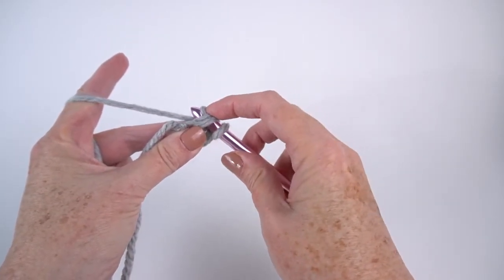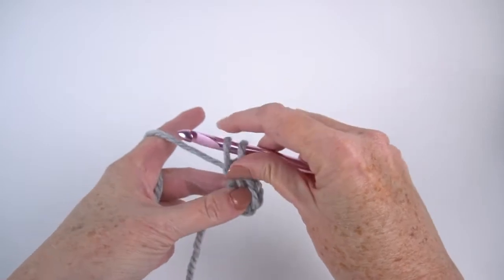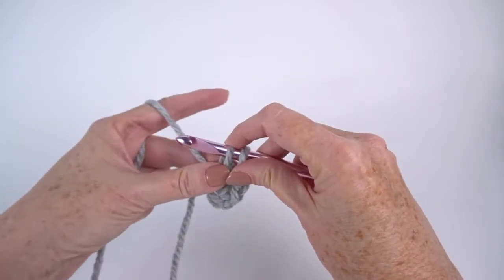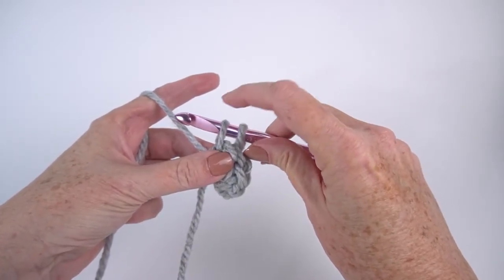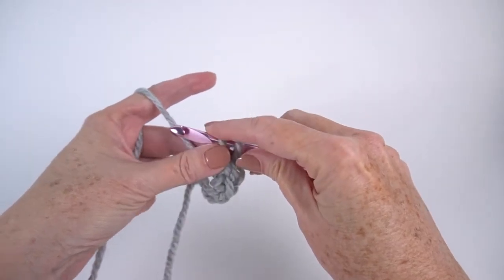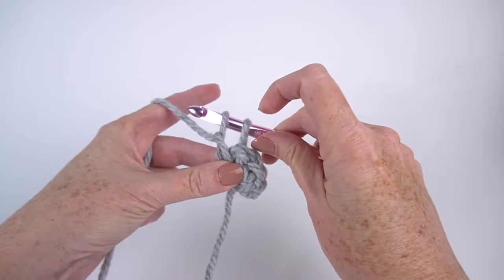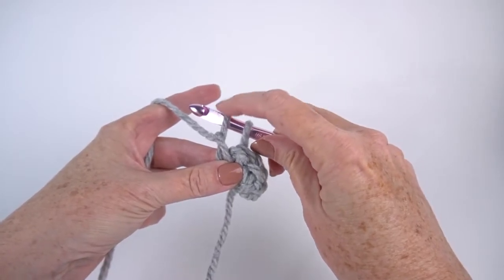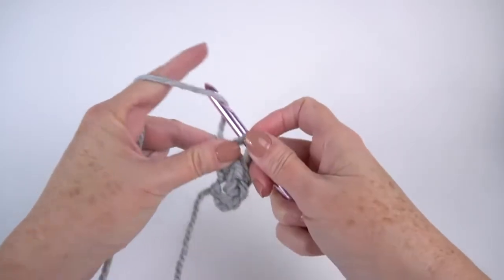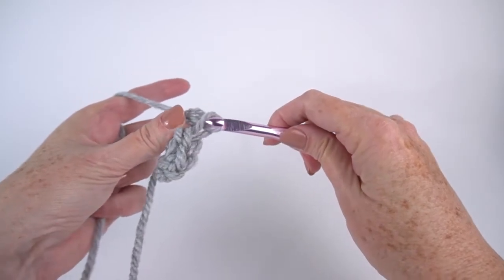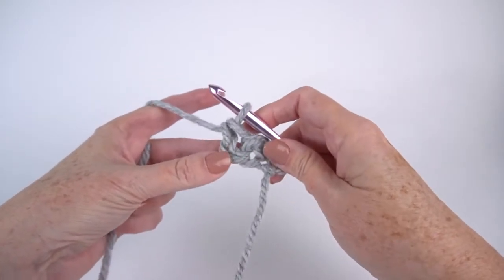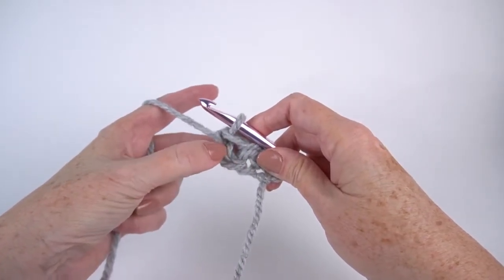Yarn over and draw up a loop, making sure it gets up onto the fat part of the hook. I don't want it to be too tight. Now I have one, two loops. I'm going to chain one. Still have two loops. One, two. Yarn over, draw through two to finish the single. There's the next single. There's that third one.